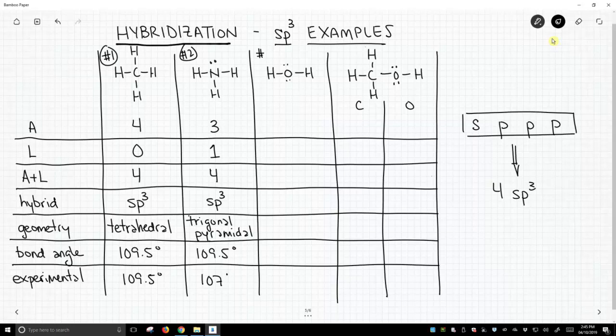Molecule number three is water. Water has, the oxygen has two attached hydrogens. It has two lone pairs. A plus L equals four, leading us to sp3 hybridization. The geometry of an sp3 hybridized atom with two attached atoms is bent. We would predict 109.5 for all sp3 hybridized atoms and the experimental value is about 104.5. Good match.